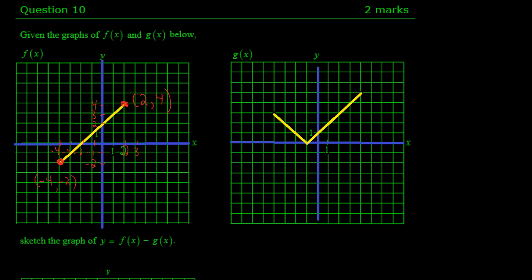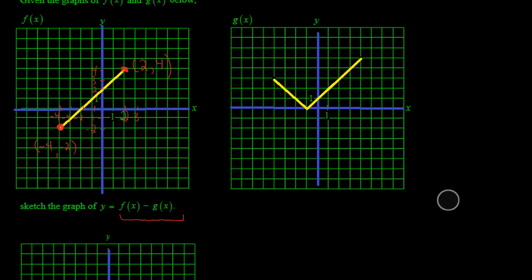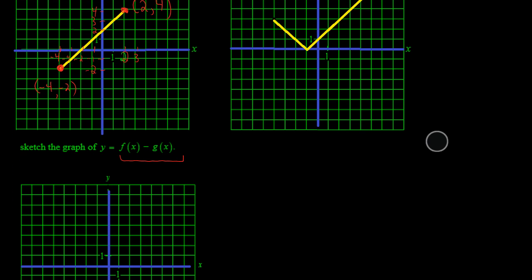So in order to find the difference, what we really got to understand is we're finding the difference of the y values. f(x) represents the y value in the first graph, and g(x) represents the y value in the second graph. So before I move on to the second graph, I'm just going to grab all the y values that I have.